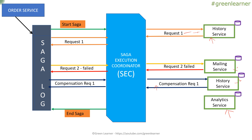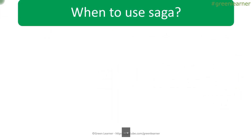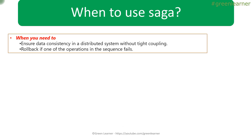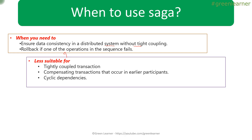That covers the Saga pattern in database design patterns. When to use Saga: when you need to ensure data consistency in a distributed system without tight coupling, and when you need rollback if one operation in the sequence fails. It is less suitable when transactions are tightly coupled, when compensating transactions occur in earlier participants, or when there is cyclic dependency.